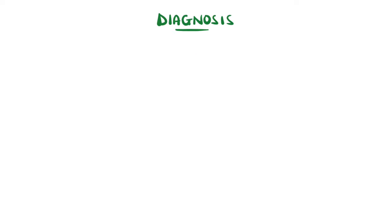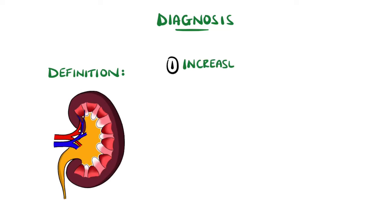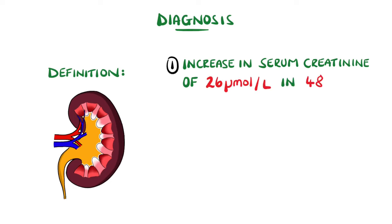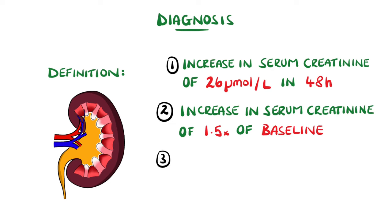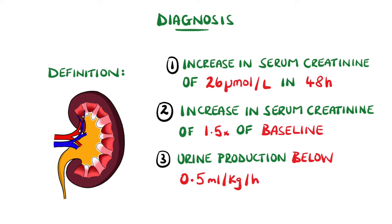The definition of AKI has been proposed as an increase in serum creatinine by 26 micromoles per litre in 48 hours, an increase in creatinine by 1.5 times the baseline in 7 days, or urine production of less than 0.5 millilitres per kilogram per hour for more than 6 hours, as each of these would generally indicate a reduction in GFR.